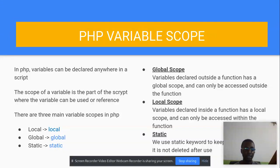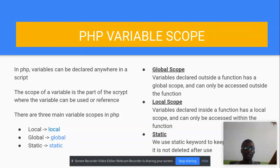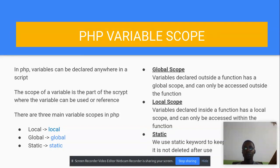Global variables are variables that when declared outside of a function, they cannot be accessed within a function. If we have a function and we declare a variable outside of it, trying to access it inside that function will give an error. A local variable, when declared inside a function, cannot be used outside of the function. A static variable is one that you can reuse — when you call the function again, there is a possibility of reusing it.